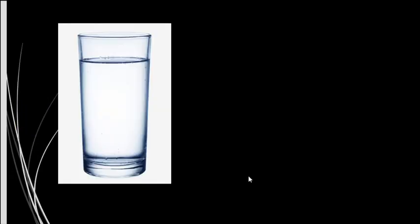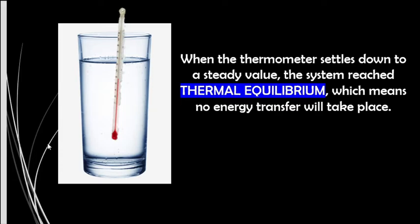If we would like to get the temperature of this glass of water, we have to use a thermometer, and it must be placed in contact with our system. We have to wait for the thermometer to settle down. Once the reading has a steady value, we can say that the system — composed of the glass, the water, and thermometer — has reached thermal equilibrium, which means no energy transfer will take place between the objects.